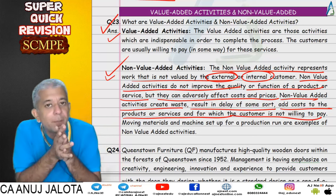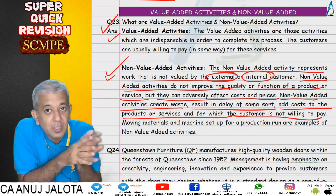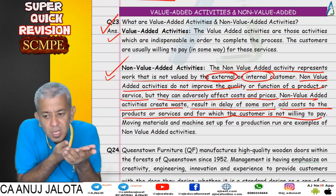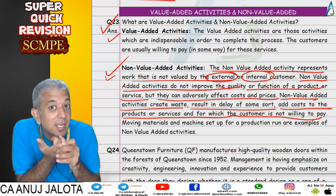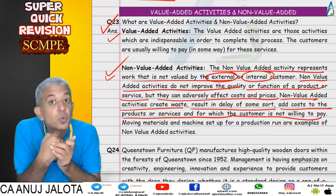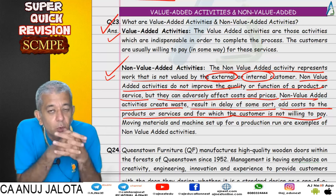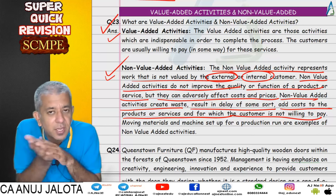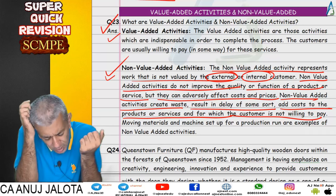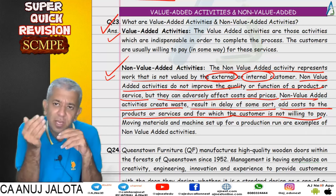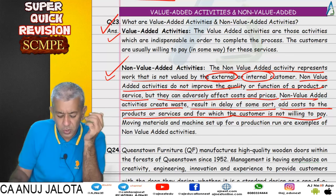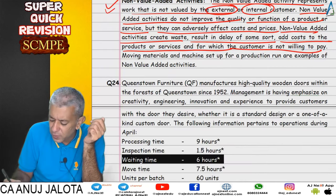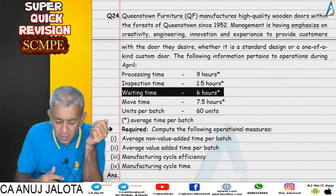Non-value-added activities create waste, result in delays, and add cost for which the customer is usually not willing to pay. That is why we have an entire chapter called lean systems — to think about how to avoid wastages. Wastages of time are addressed through cellular manufacturing, wastages of stock through just-in-time, and wastages of quality through six sigma techniques. So value-added and non-value-added activities are central concepts in question number 23.